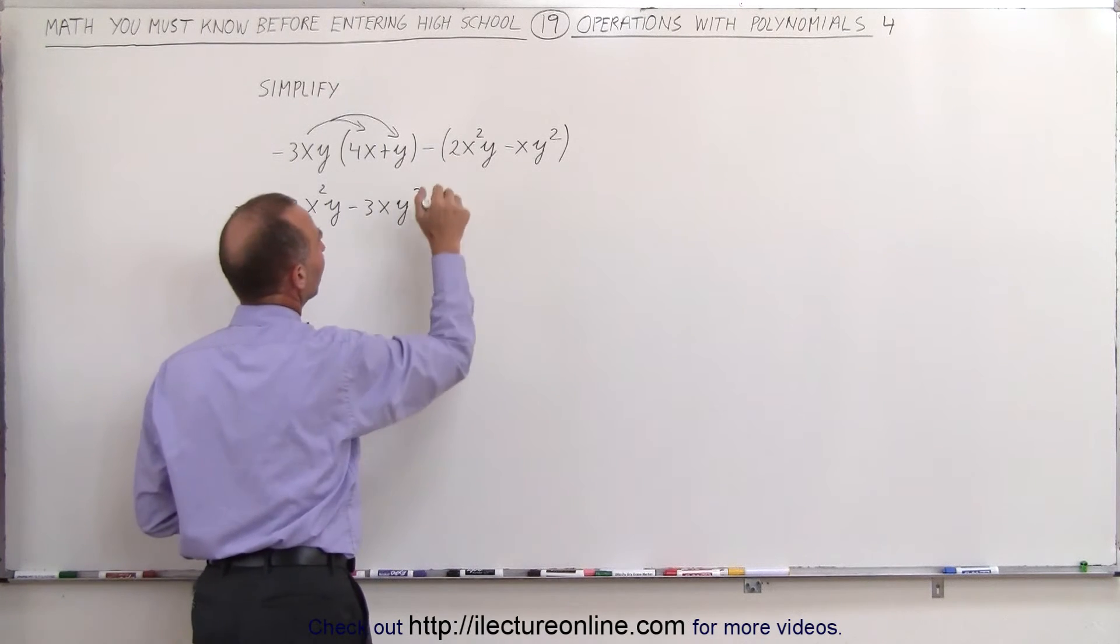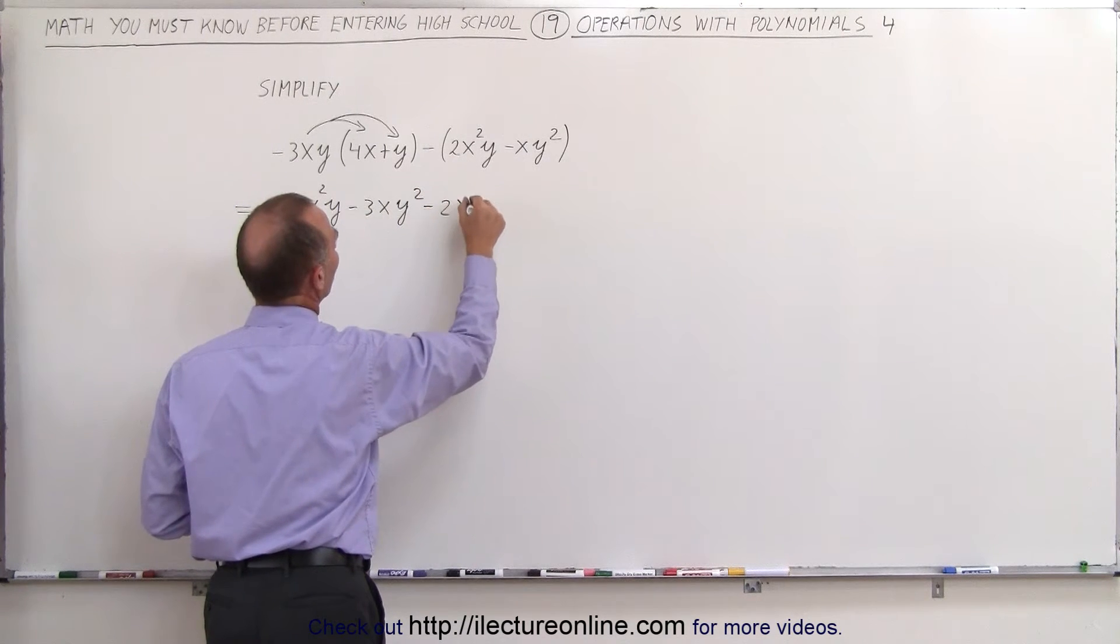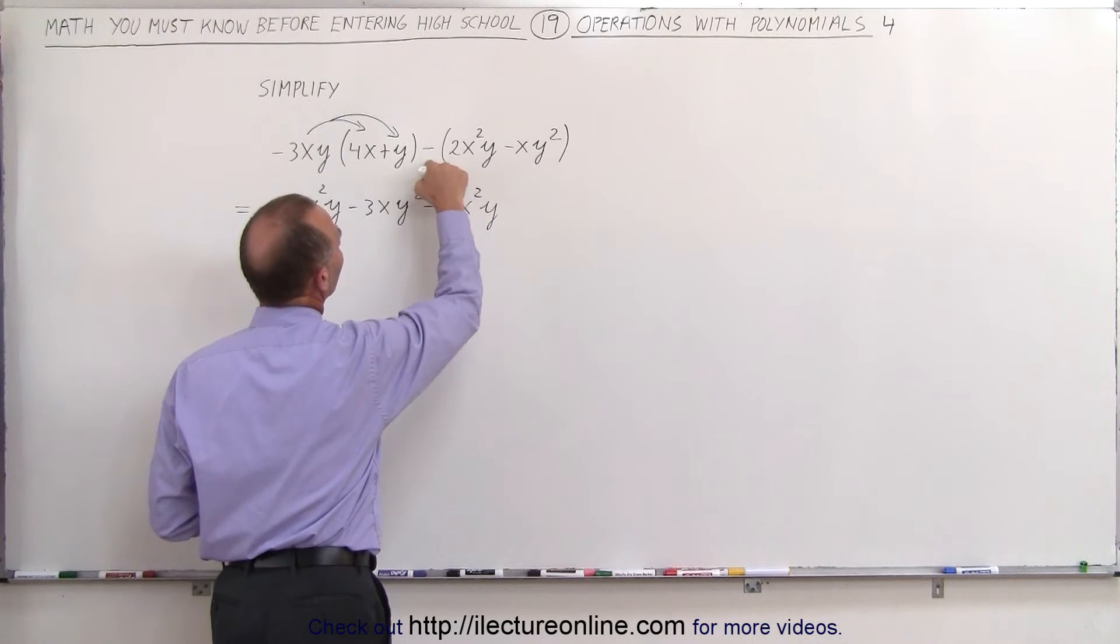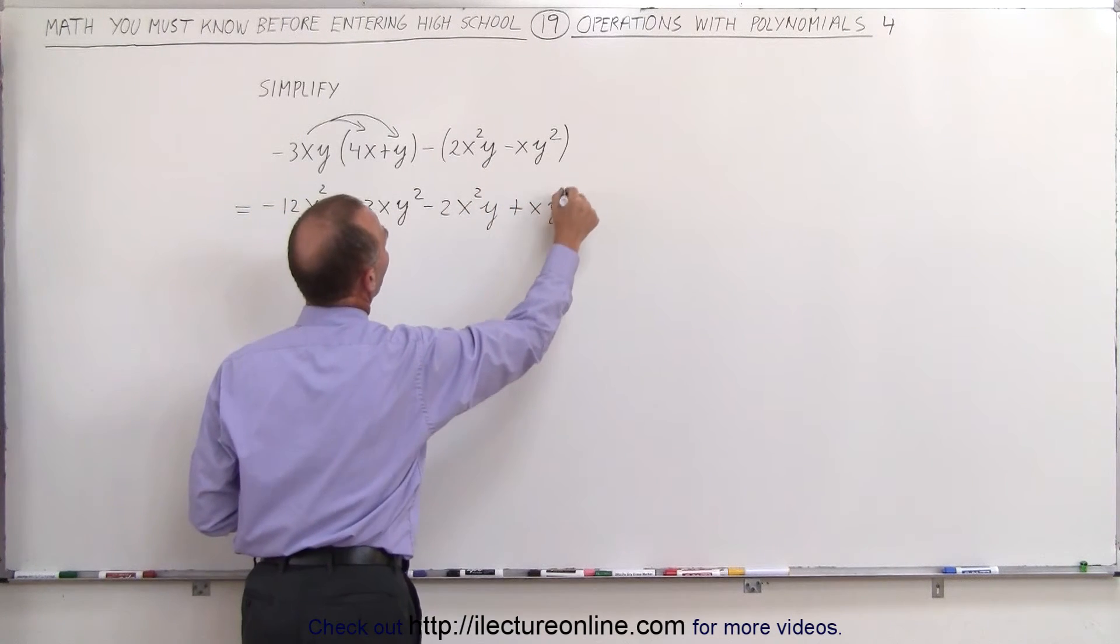Now we apply the negative sign to this. This becomes minus 2x squared y. And a minus times a minus becomes plus xy squared.